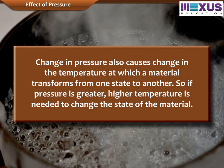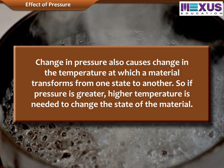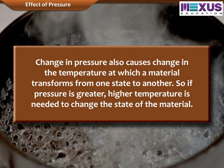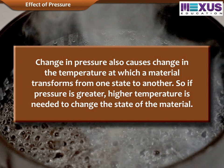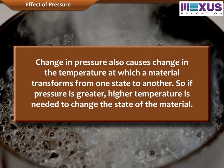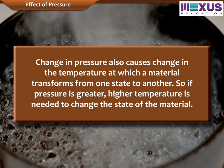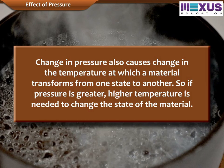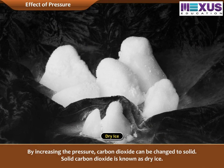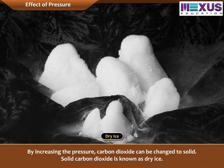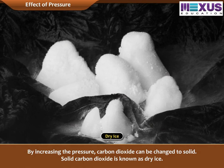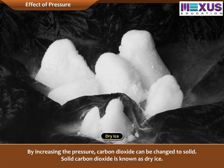Change in pressure also causes change in the temperature at which a material transforms from one state to another. So if pressure is greater, a higher temperature is needed to change the state of the material. By increasing the pressure, carbon dioxide can be changed to solid. Solid carbon dioxide is known as dry ice.